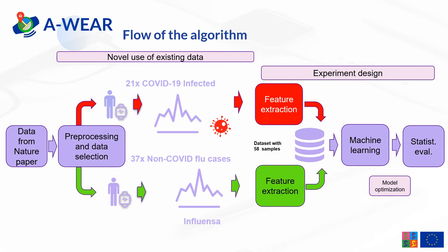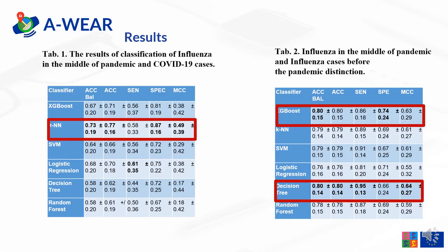In the tables, the outcomes of the research are summarized. The results of the scenario with influenza in the middle of the pandemic and COVID-19 disease are presented in table 1. The best balanced accuracy — 73% — and MCC were achieved for the KNN algorithm. Nevertheless, the data were imbalanced: 57 influenza cases and 21 COVID cases. 58% of the COVID-19 cases were classified as positive (sensitivity), whereas 87% of the influenza cases were correctly classified. The highest specificity achieved was for logistic regression at 61%.